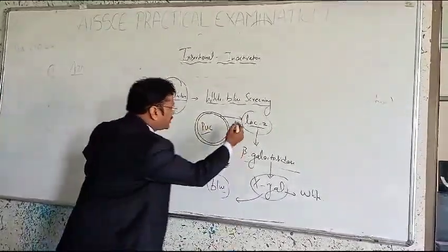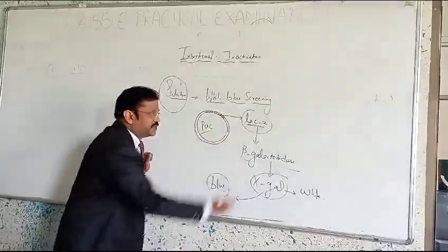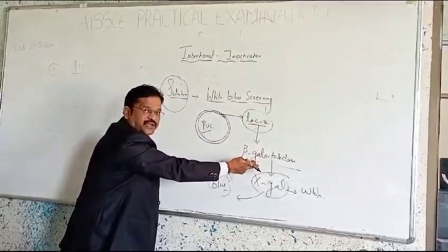In this PUC vector, we have got a selectable marker, and that marker is a gene which produces LacZ. That means beta-galactosidase.